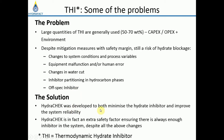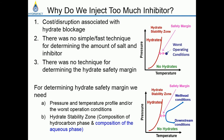HydraCheck was developed to both minimize hydrate inhibitor injection rate and improve system reliability. HydraCheck is an extra safety measure ensuring there is always enough inhibitor in the system and warns the operator against changes in system variables. The main reason we inject too much inhibitor is that the cost of hydrate blockage is huge, and there is no simple, fast technique for determining the amount of salt and inhibitor.